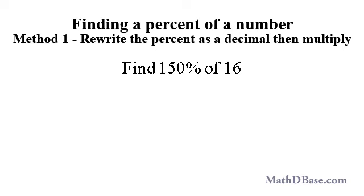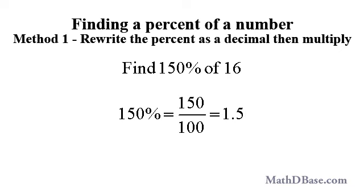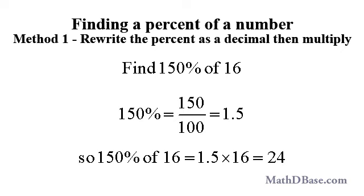Let's use this method to find 150% of 16. Since 150% is larger than 100%, we expect the answer to be larger than 16. 150% by definition is equal to 150 over 100, which reduces to 1.5. So 150% of 16 is equal to 1.5 times 16, or 24.